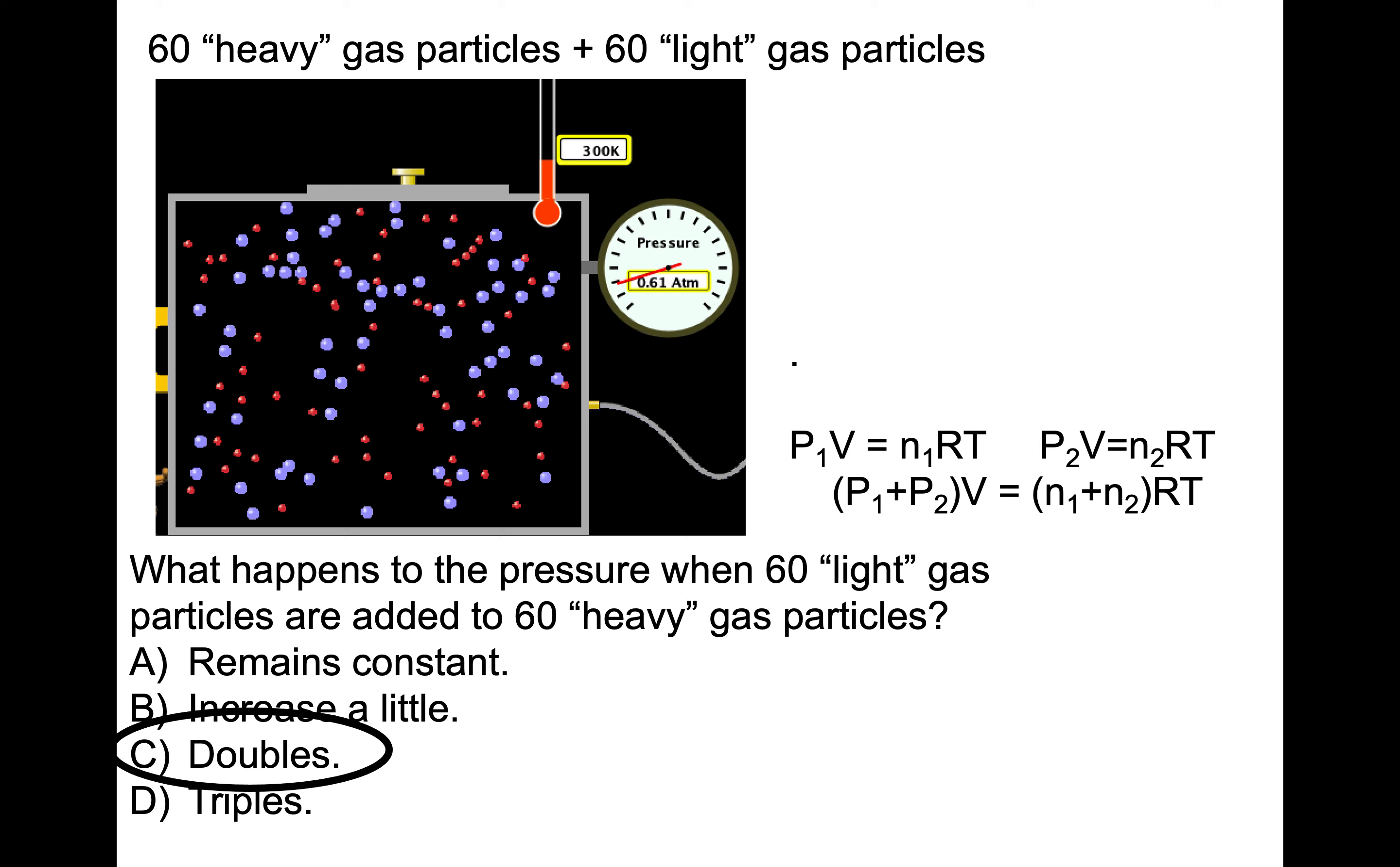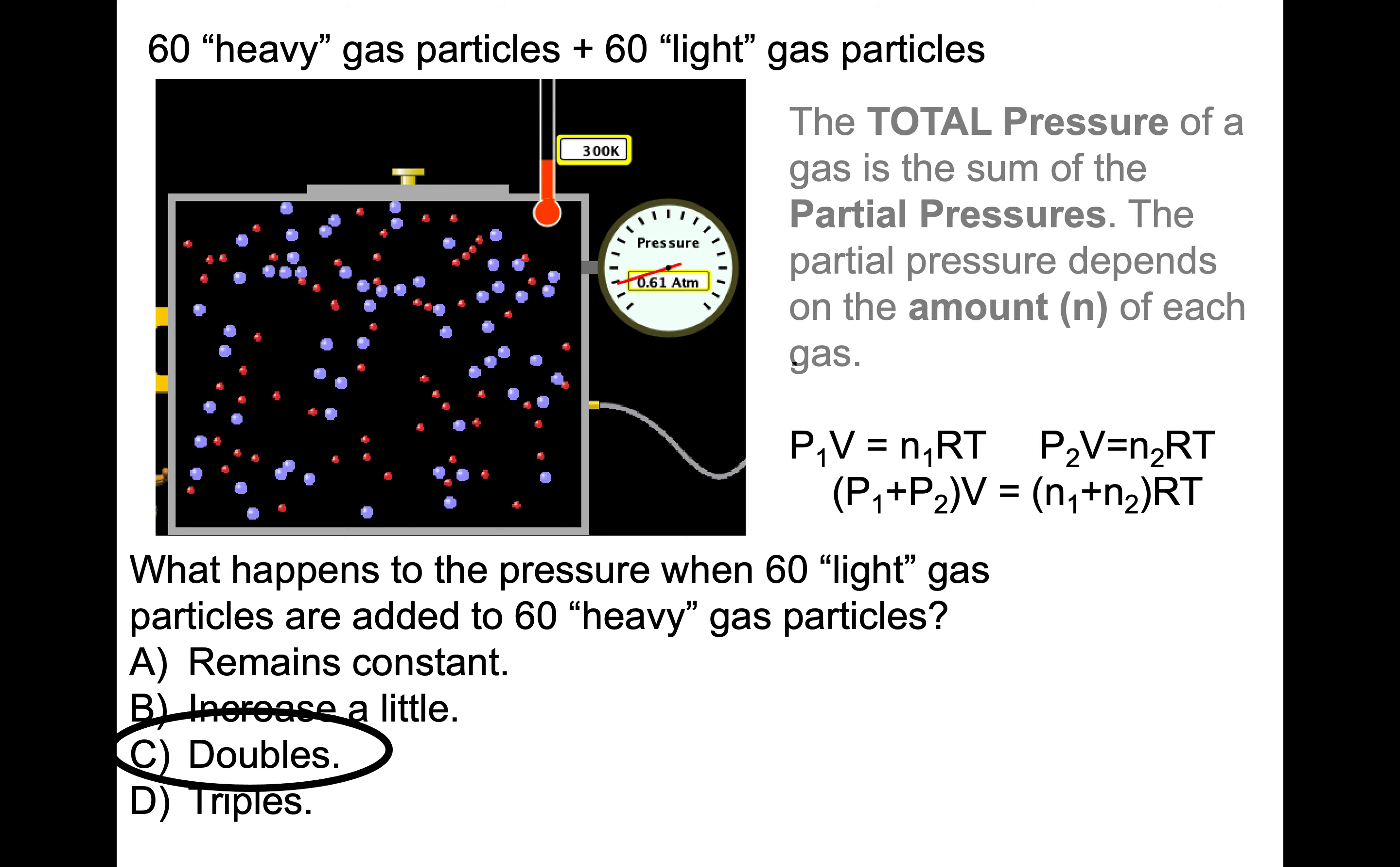Remember for our ideal gas equation, it's only the number of particles that is important. This idea of looking at the pressure for each set of particles independently and then adding them together - that's going to be very useful for us. The total pressure of the gas is the sum of these partial pressures - the pressure coming from one type of gas particle and the pressure coming from another type of gas particle. The total pressure only depends on the total number of gas particles. But we could think about it, at least mentally, in terms of dividing it up into the contribution that's coming from, let's say, the heavy particles and the lighter particles.